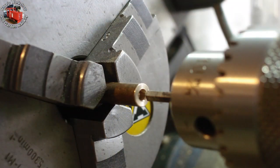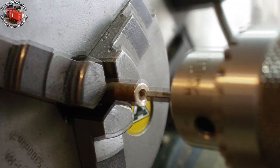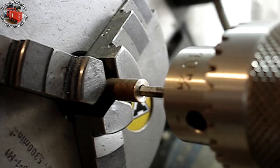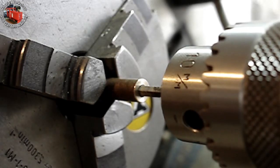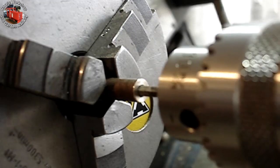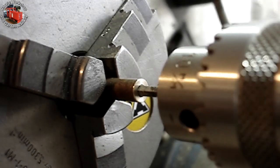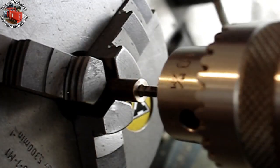The broach is in the tail stock chuck. Unfortunately, neither chuck was tightened sufficiently.